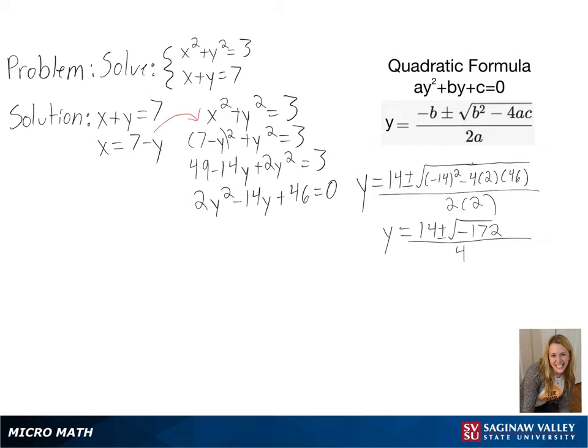After simplifying, we can see we have a negative in our square root, so since this is not a real number, we will have no solution.